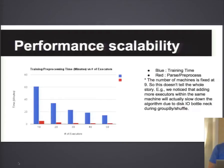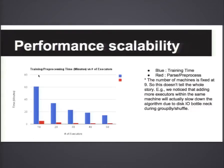This graph shows how training time reduces as you increase the number of executors. With only 10 executors, it takes almost 60 minutes to train 100 trees. But once we reach 50 executors, we can finish training 100 trees on 8 million data samples in 18 minutes.